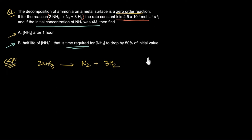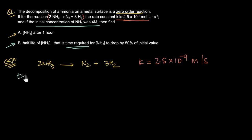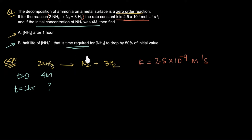The rate constant k is 2.5 × 10⁻⁴ molar per second. At time t = 0, the concentration of ammonia was 4 molar. To find the concentration after 1 hour, we need to figure out the rate at which ammonia is being converted into products.